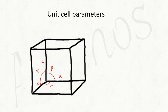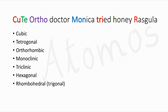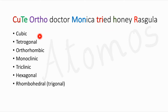Depending upon these six cell parameters — three edges and three angles between them — you can have seven crystal systems. Our challenge is to identify each crystal system along with its edge lengths and angles. Our trick is this sentence: 'Cute Ortho Doctor Monica Tried Honey Reskula.' You can retain this sentence in your memory, and it will help you remember the seven crystal systems in order.